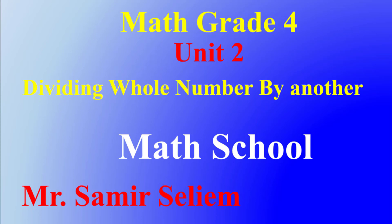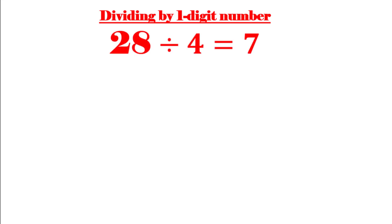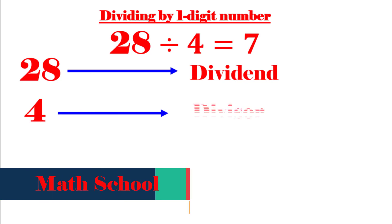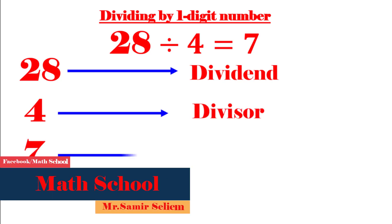Hello everyone, hello grade four. Our lesson today is dividing whole numbers by another number. We will study first dividing by one digit number. Let's revise: 28 divided by 4 equals 7. What does that mean? It means what number times 4 equals 28 — that number is 7. Now, 28 is called the dividend, 4 is called the divisor, and 7 is called the quotient.